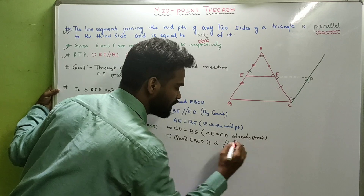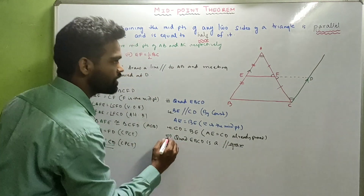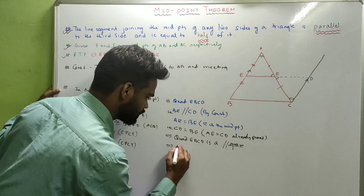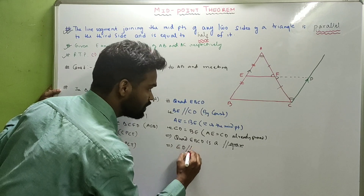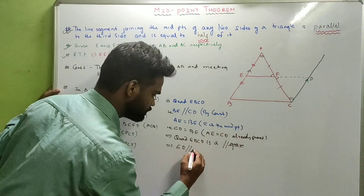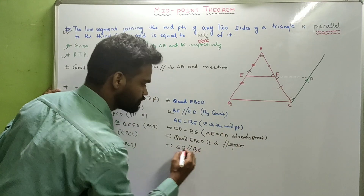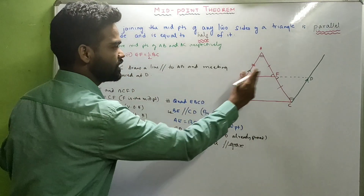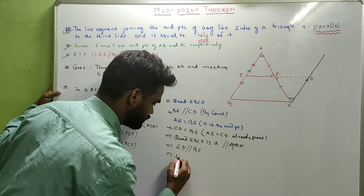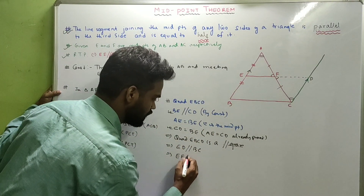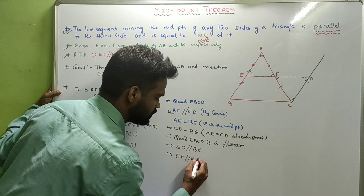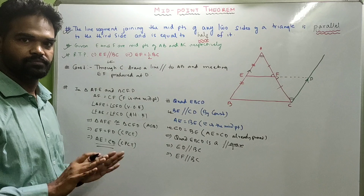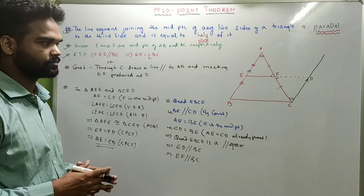Since EBCD is a parallelogram, ED is parallel to BC. Which means EF is parallel to BC. The first part is proved.